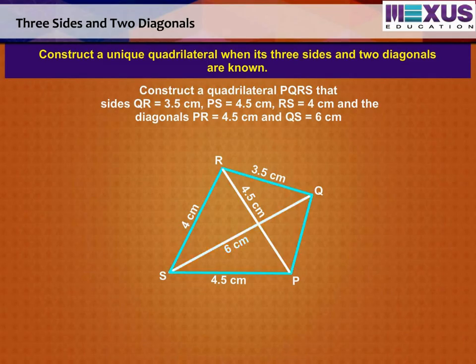We saw that when four sides and a diagonal were given, we first drew a triangle with the available data. And then, try to locate the fourth point. The same technique is used here also. Let us now construct it step by step.